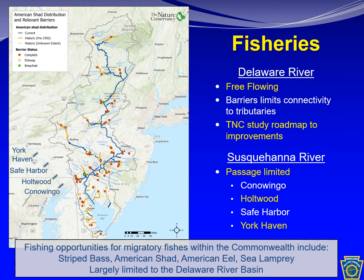The Nature Conservancy is generating a roadmap of known barriers within the Delaware River Basin as depicted in this graphic. Known barriers are the colored circles and historical ranges are colored orange as reference for American shad. The roadmap will include a prioritization for passage improvements based on a variety of elements such as habitat suitability for migratory fishes above the barrier.